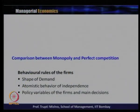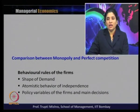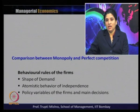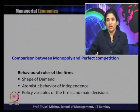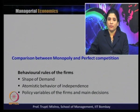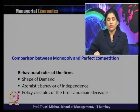When it comes to the behavioral rules of the firm, the shape of the demand curve in the case of a monopolistic firm is downward sloping — the regular demand curve. But in the case of a perfect competitive market, it is horizontal, because there is no change in price — at the same price whatever the buyer is willing to buy they can buy, and whatever the seller is willing to sell they can sell. In the case of the monopolist, the demand curve is downward sloping, and whenever they have to increase quantity demanded they have to reduce the price. There is also strategic independence in the monopolist firm but that is absent in perfect competition.